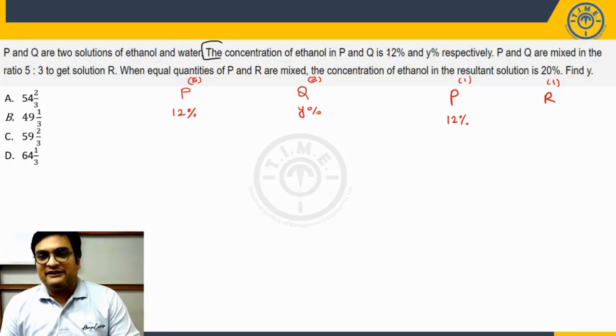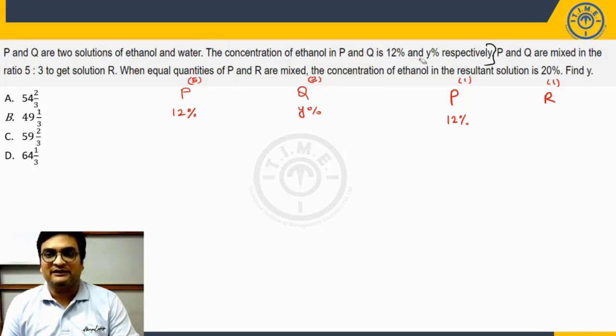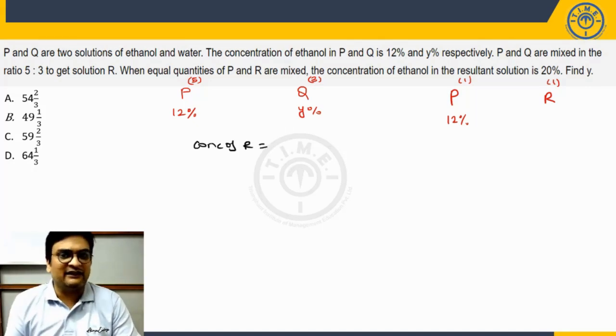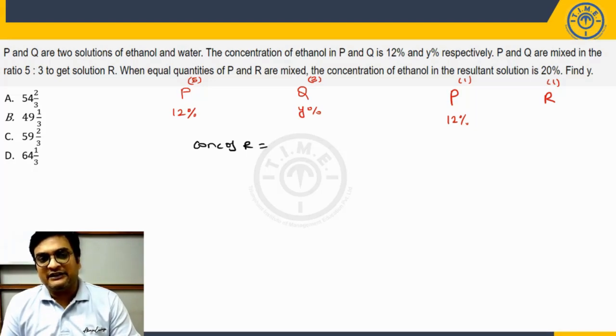Let us focus on this part of the information. It says concentration of ethanol in P and Q is 12 and Y. P and Q are mixed in the ratio 5 to 3 to get R. Mixing these two in the ratio 5 to 3 to get the concentration of R. Thus can I say the concentration of R, concentration of ethanol in R will be nothing but you are taking 5 parts of this.